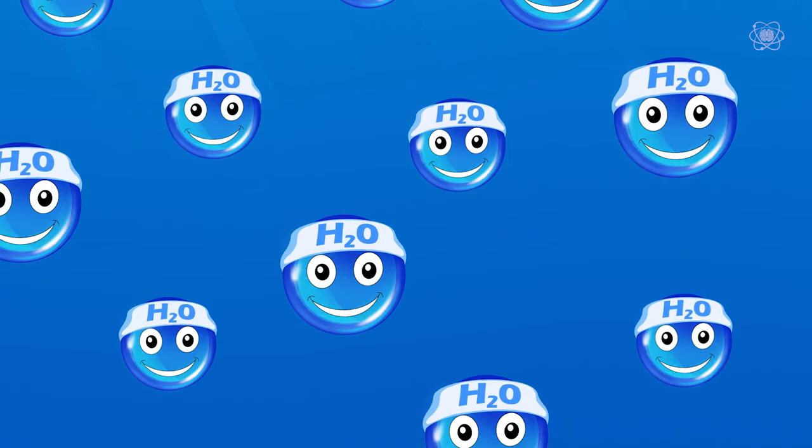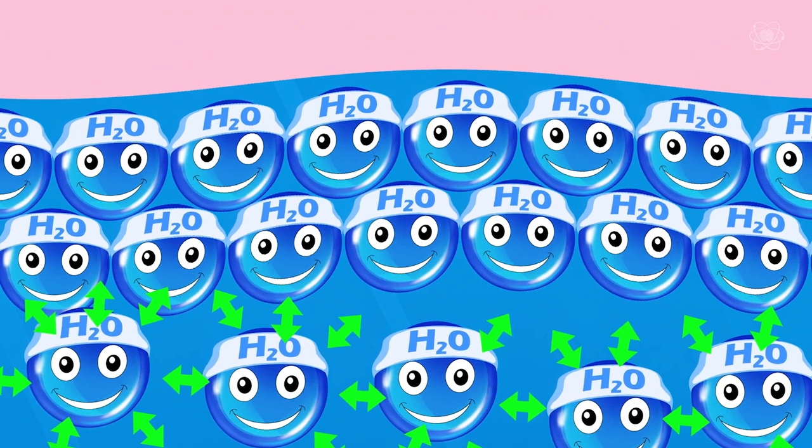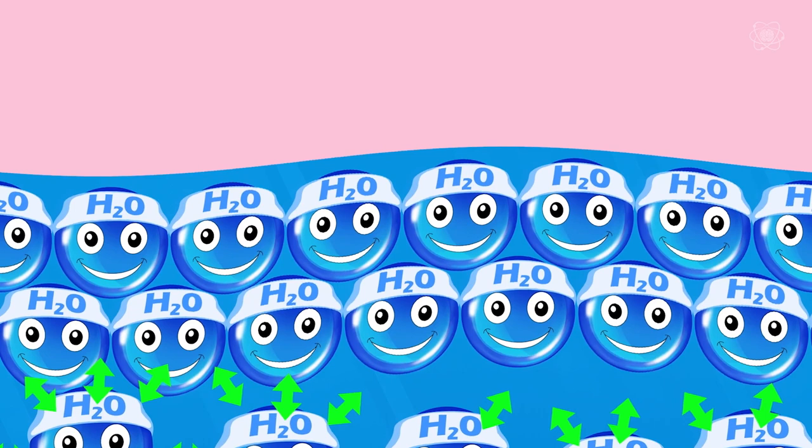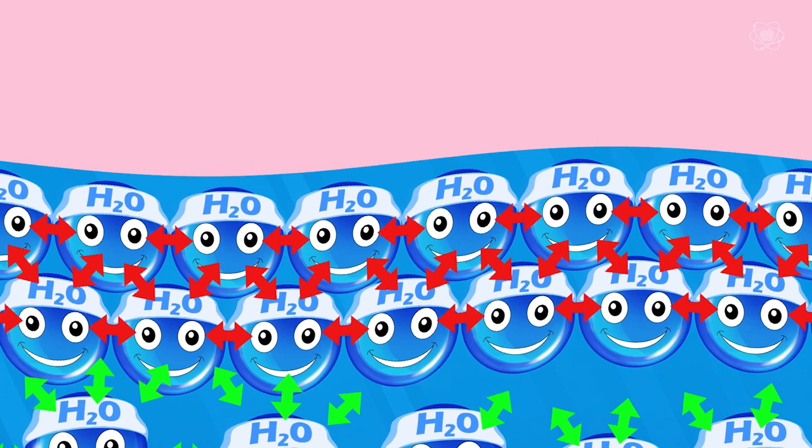When we look at water molecules below the surface, they are being pulled in all directions by other water molecules. But when we look at the water molecules at the surface of the water, there are no water molecules on top, so they're missing that attraction above them. So our surface molecules get to form stronger bonds with the molecules to their sides and below. These stronger bonds mean the molecules are being pulled tighter together, creating a tension that is not found in the rest of the liquid. That's why we call it surface tension.